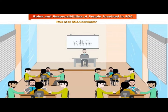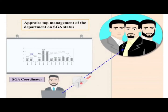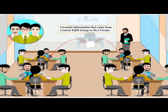Let's start with the role of an SGA coordinator. The SGA coordinator generally registers or modifies SGA circles through a quality information knowledge system or through an IT portal for SGA administration. They also approve Kaizen, which is some type of small improvement activity from which management gets some benefit.